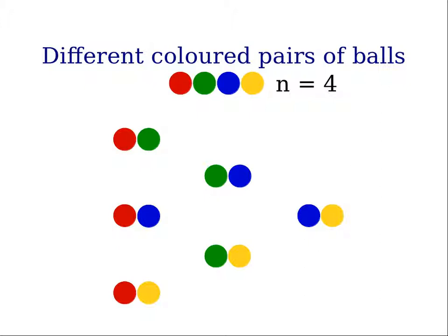Then the pairs that we can create with those four colored balls: red-green, red-blue, red-yellow. Note that green-red is not a different pair, it's the same as red-green, so we don't count green-red as a separate pair.